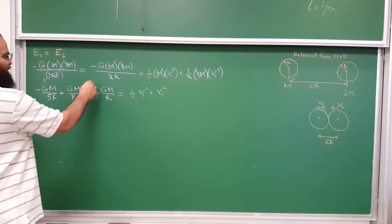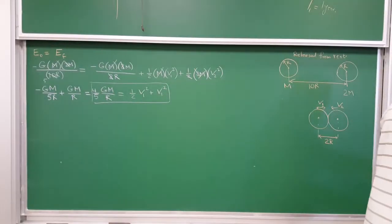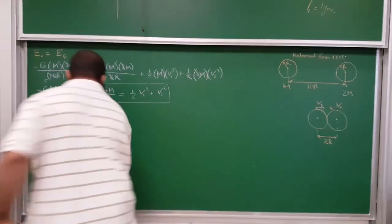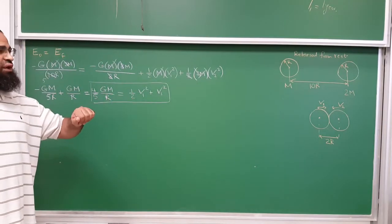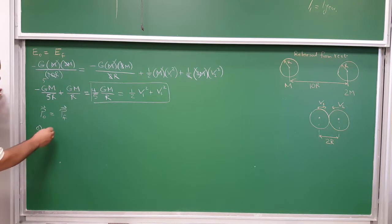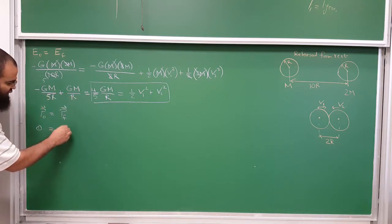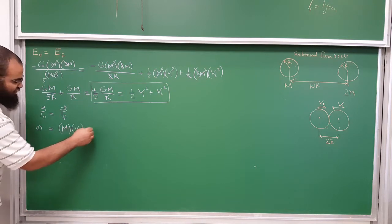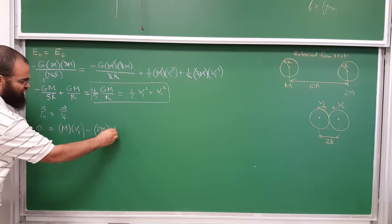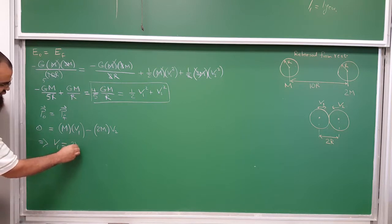Conservation of momentum: initial momentum is zero since both were at rest. When moving, one goes right (+M·V1) and the other goes left (−2M·V2), so M·V1 − 2M·V2 = 0. Therefore V1 = 2V2.